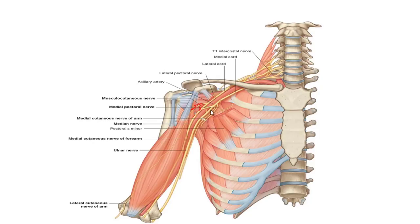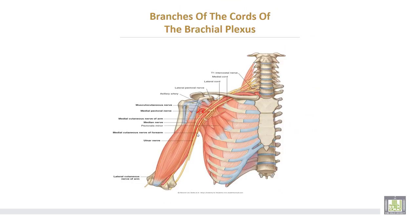The medial cord gives the medial cutaneous nerve, the ulnar nerve, and the medial root of the median nerve. The posterior cord gives the upper and lower subscapular, the thoracodorsal, then the circumflex or axillary nerve, and lastly the radial nerve.